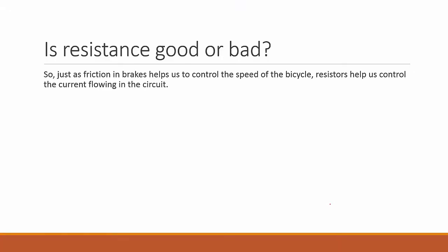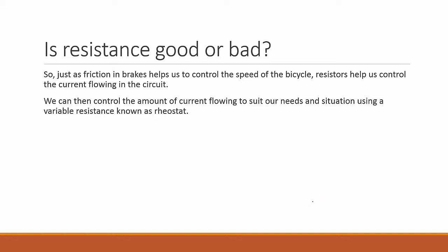So just as friction in brakes helps us to control the speed of the bicycle, resistors help us to control the current flowing in the circuit. We can then control the amount of current flowing to suit our needs and situation using a variable resistance known as a rheostat.